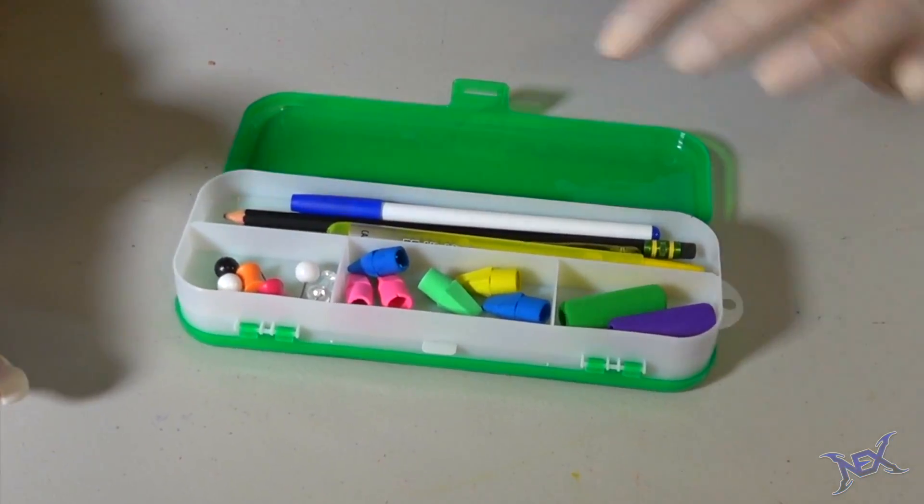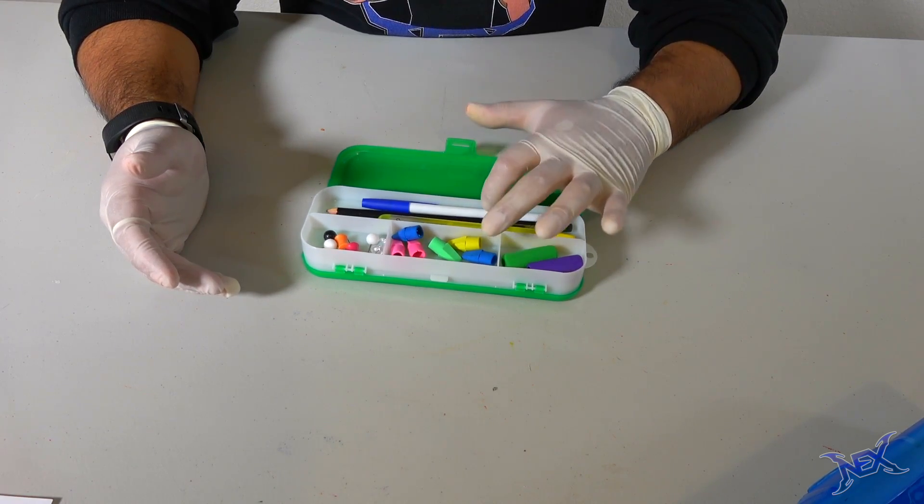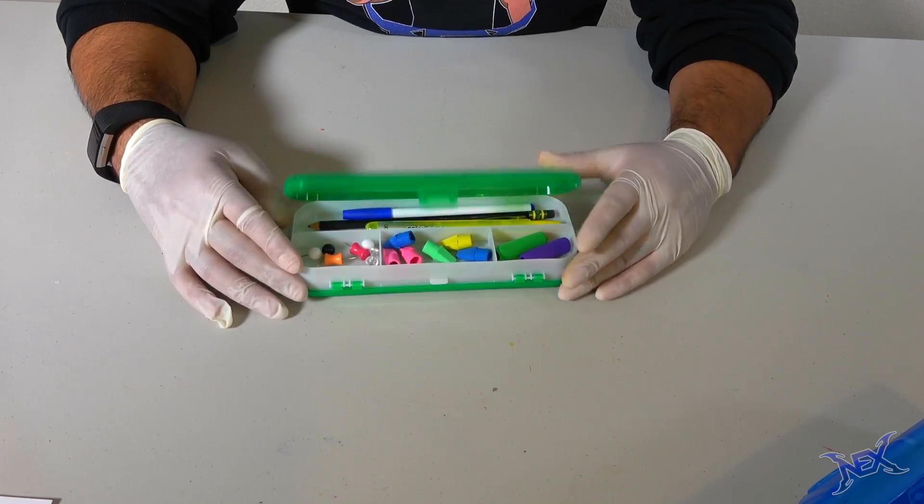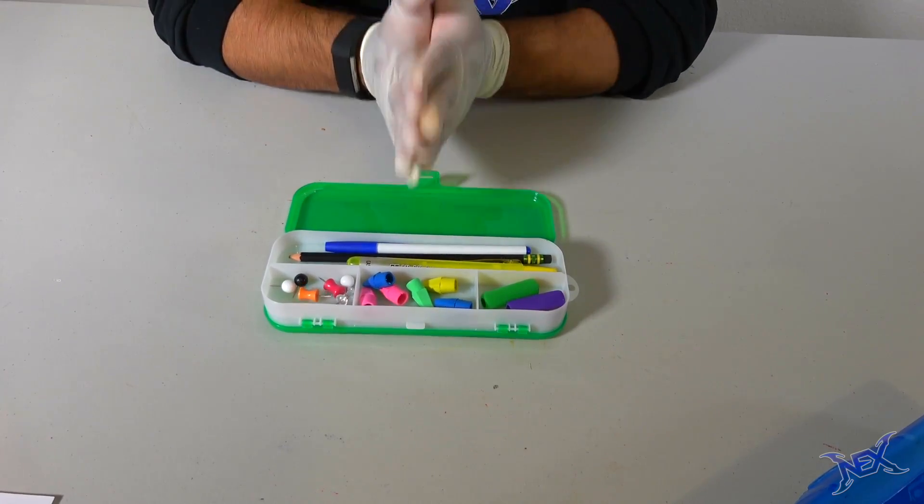already put some supplies in there. I got a highlighter, a pencil, a pen, some erasers, pencil grips, and a few push pins. It's a regular supply box and even the top is see-through. This is one of the greatest things I have ever seen at the dollar store. Why? Well, because guys, if you close it and flip it